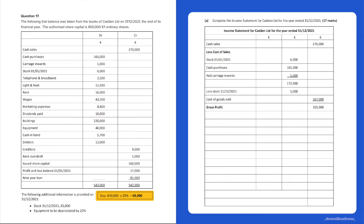For the rest of the video we'll be doing the work on the right-hand side. Income statement one, which is the trading account, is already completed for us. We have to complete income statement two, which is the profit and loss account. Income statement one calculates the gross profit or gross loss, and in this case the business made a gross profit. Income statement two calculates the net profit or net loss.